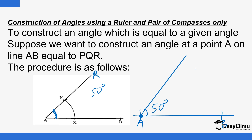Even though you have transferred the angle, you haven't followed the instruction — the instruction was to use a ruler and a pair of compasses only. So in that case you have failed the test, even though the answer is right. In mathematics, the method matters a lot. How you are arriving at the final answer is very important. I would be expecting to see an arc there, and an arc there, and then you joining — you won't be able to fake having used a pair of compasses.